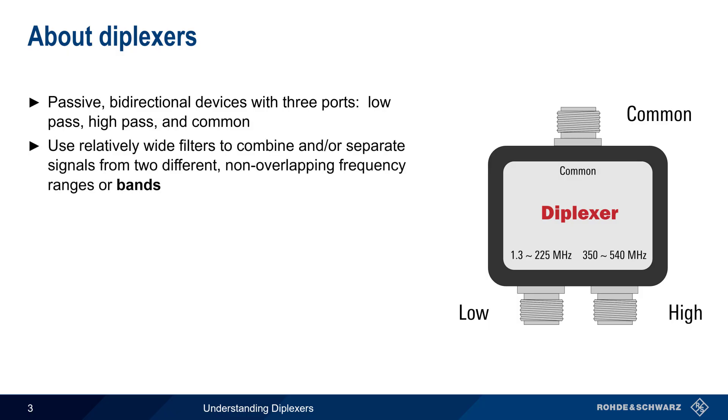Relatively wide filters are used to combine and or separate signals into different, non-overlapping frequency ranges or bands. These bands are usually far apart, that is, they're separated by tens or even hundreds of megahertz.